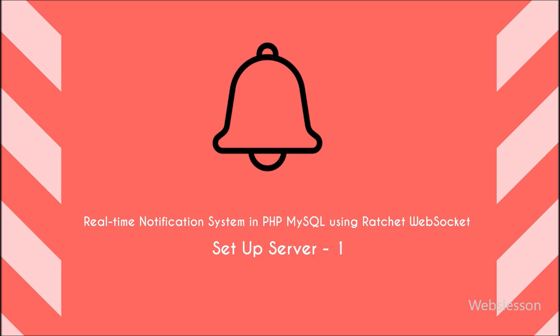First, we have to download the PHP Ratchet WebSocket library. We need PHP installed on our Windows 10 machine. Make sure you have PHP added to your system's path so we can run it from the command prompt. Next, we need Composer — it is a tool to manage PHP libraries. If you do not have Composer yet, go to the getcomposer website and download the Windows installer and run it.